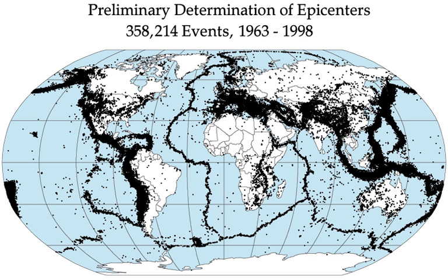Shaking and ground rupture are the main effects created by earthquakes, principally resulting in more or less severe damage to buildings and other rigid structures. The severity of local effects depends on the complex combination of earthquake magnitude, distance from the epicenter, and local geological and geomorphological conditions, which may amplify or reduce wave propagation. Specific local geological, geomorphological, and geostructural features can induce high levels of shaking even from low-intensity earthquakes—an effect called site or local amplification—principally due to the transfer of seismic motion from hard deep soils to soft superficial soils.